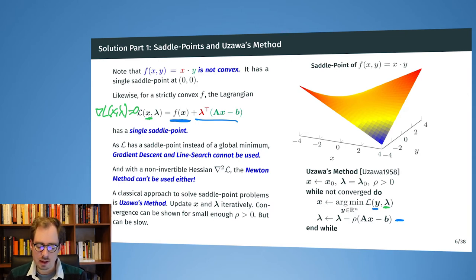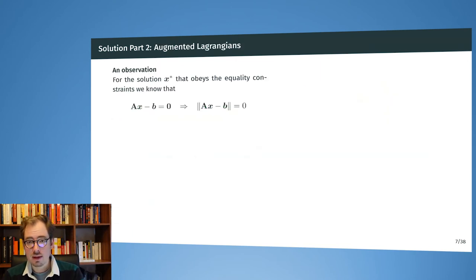And so we are now minimizing over this first part, keeping the lambda fixed. And then we update the lambda in a second step by looking at how strongly the different equality constraints are violated. And for the constraints that are violated more strongly, this lambda will be strengthened and will be given more importance, so to say. And one can show that if we have this rho larger than zero but small enough, then this will converge. However, convergence doesn't have to be fast and actually in this case it will be rather slow.